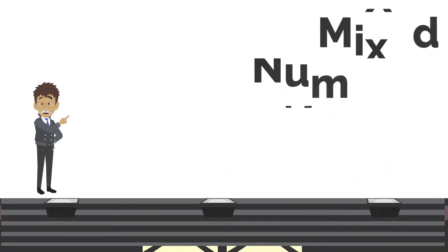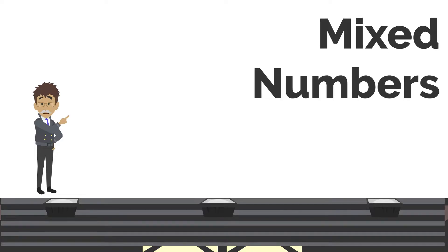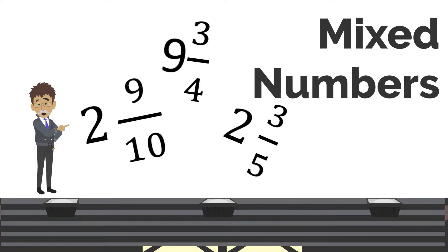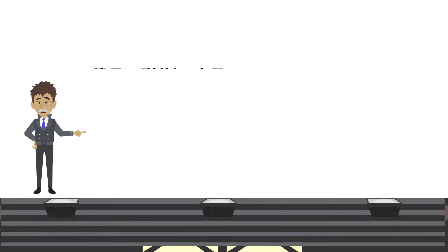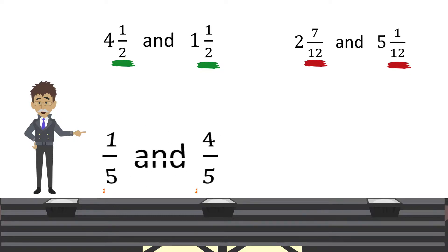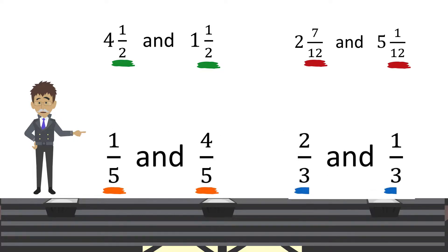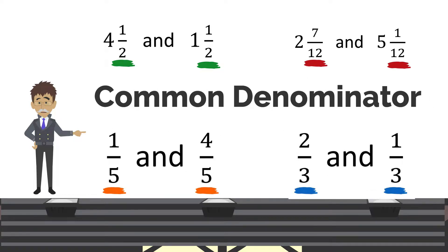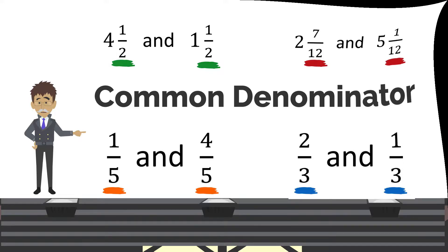A special type of fraction known as a mixed number contains a whole value and a fractional component. When two fractions have the same denominator, we say they have a common denominator.